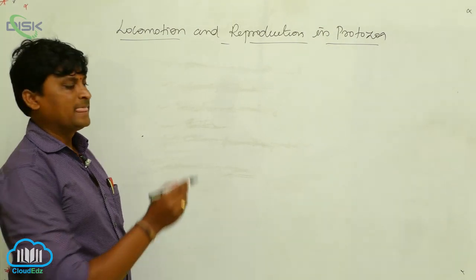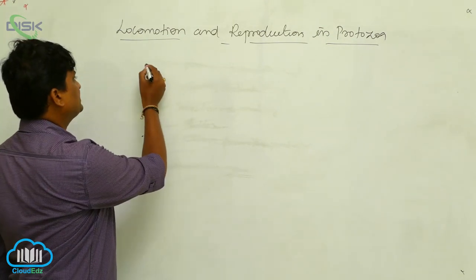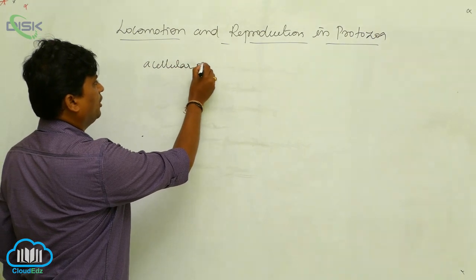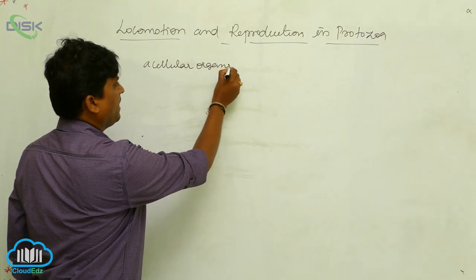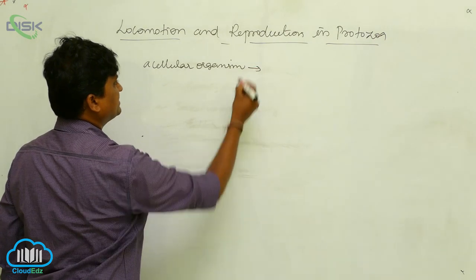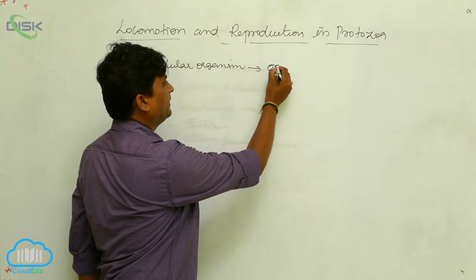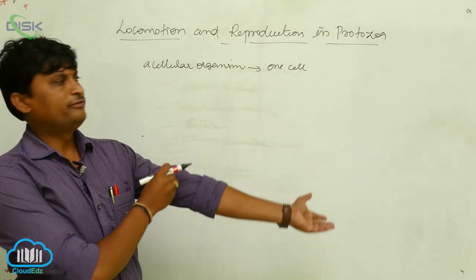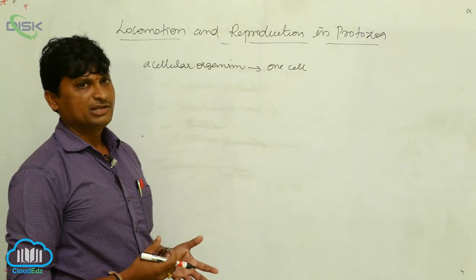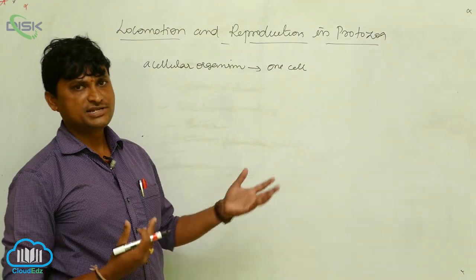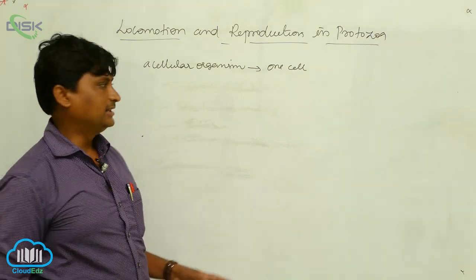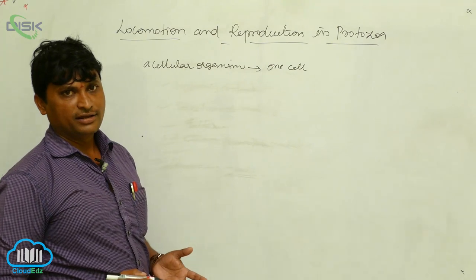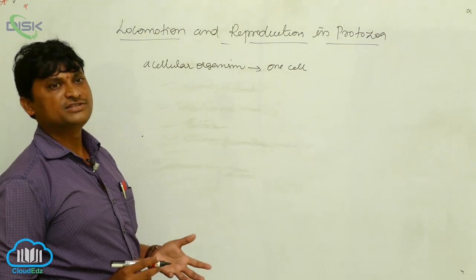The locomotion of protozoa. Protozoa are basically unicellular organisms — organisms where all metabolic activities and all movements are performed by only one cell. In protozoa, different types of locomotory organelles are observed.